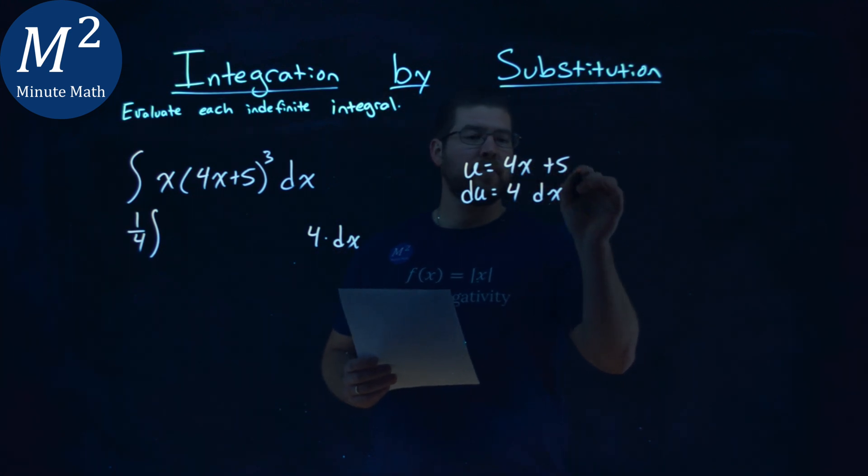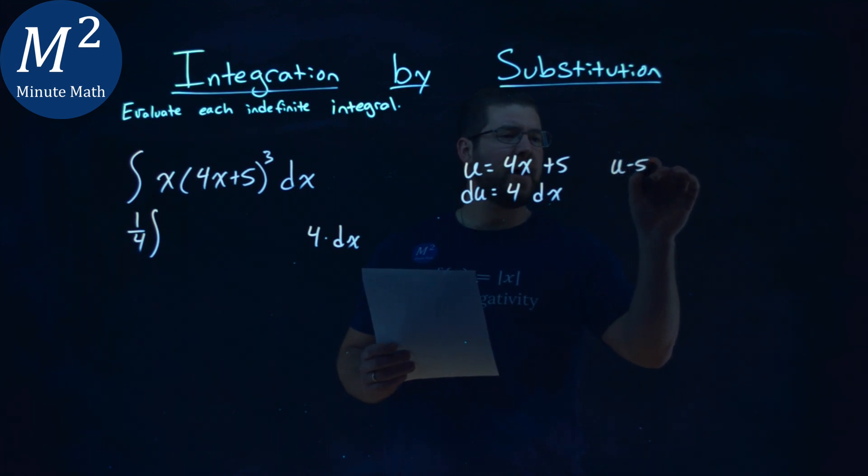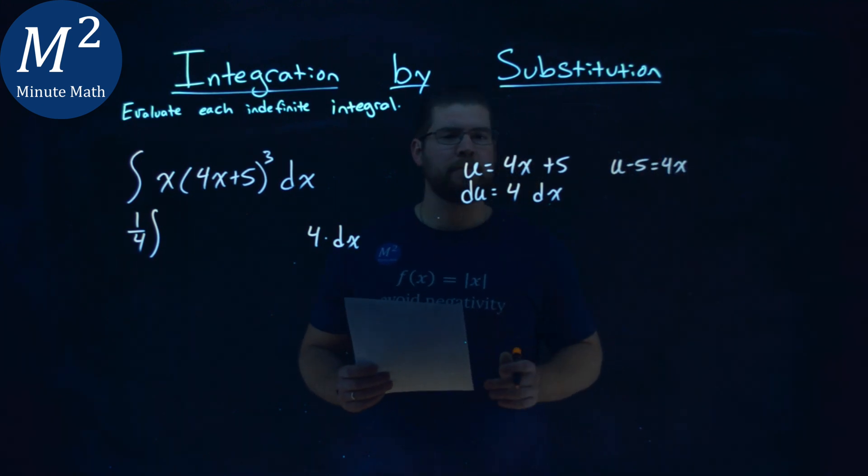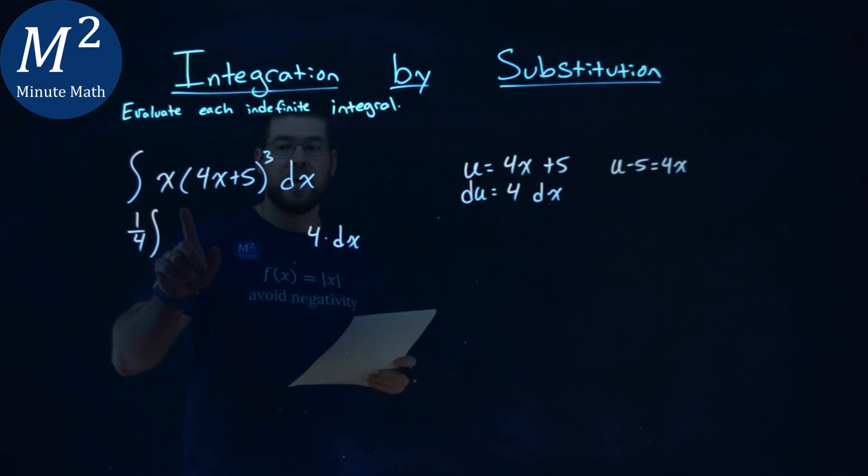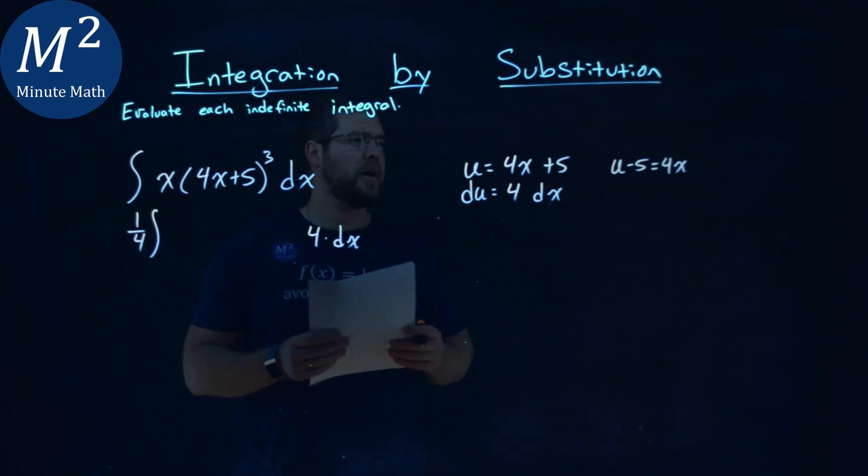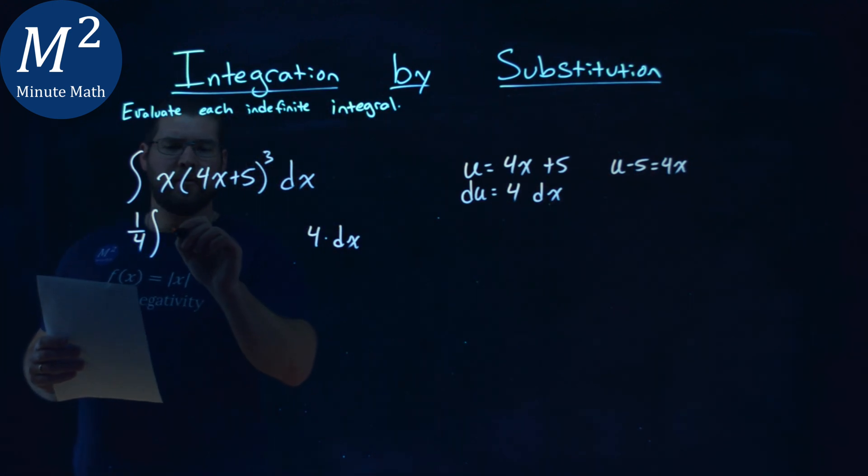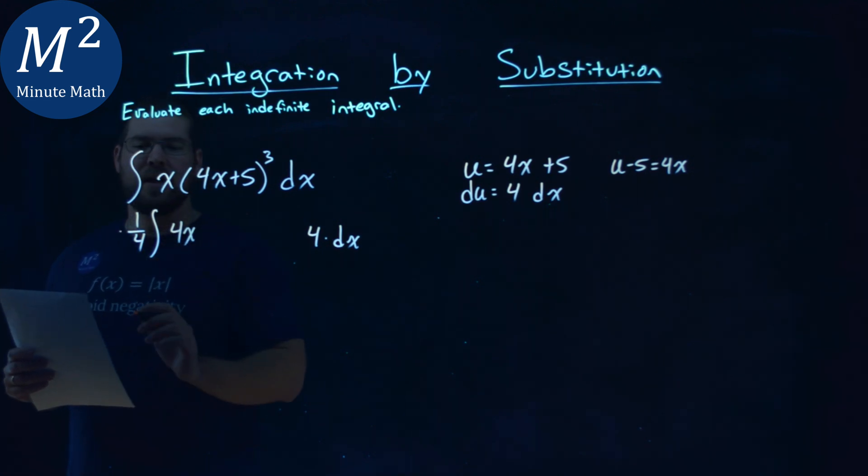Watch this. This u equals 4x plus 5. If I subtract a 5 to both sides, I have a u minus 5 equals a 4x. Now, can I create a 4x here? Yeah, right? I can create a 4x. So if I create a 4x, x is already there. I created a 4. I need to cancel out with another 1 fourth out front.